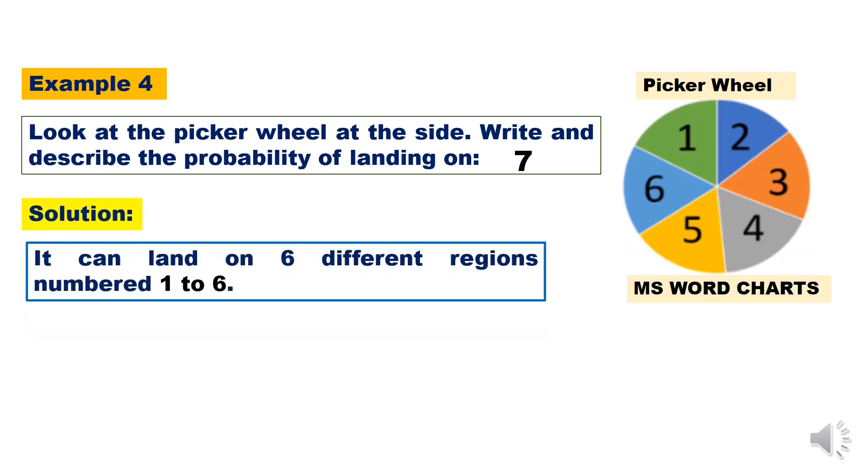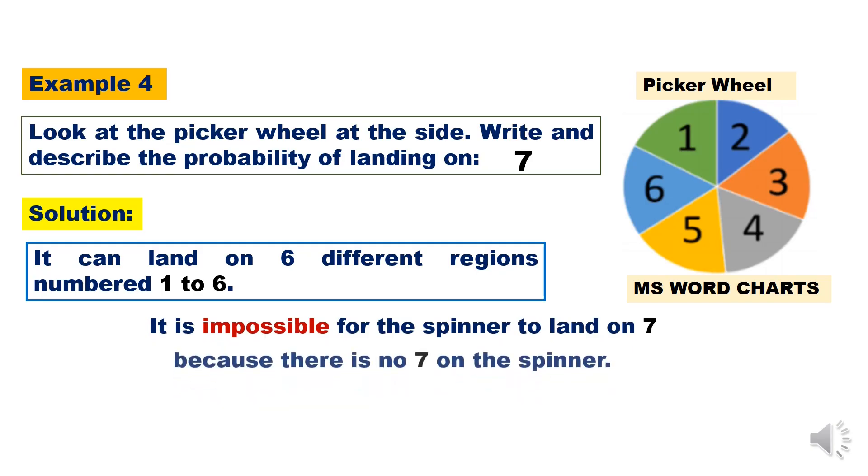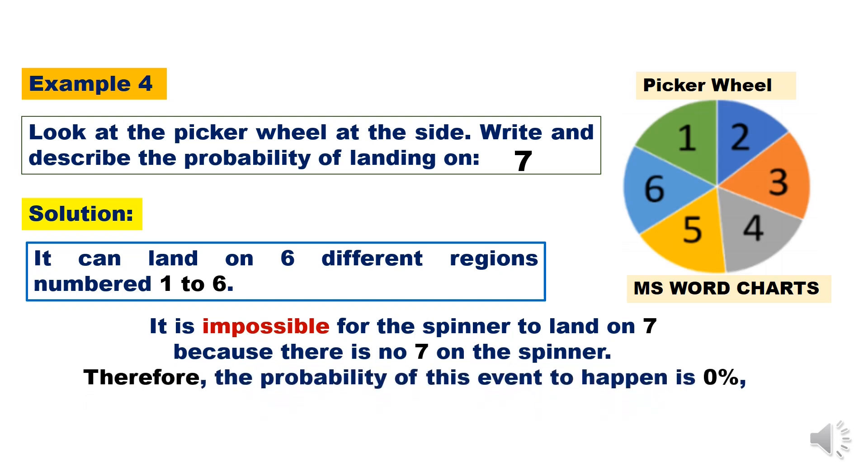It can land on 6 different regions numbered 1 to 6. It is impossible for the spinner to land on 7 because there is no 7 on the spinner. Therefore, the probability of this event to happen is 0%, or impossible to happen.